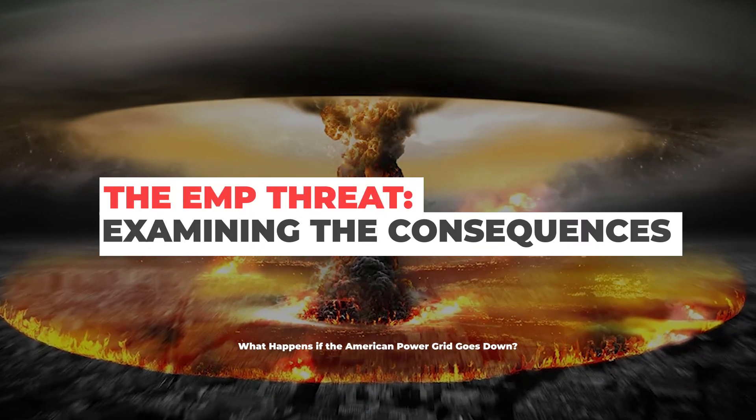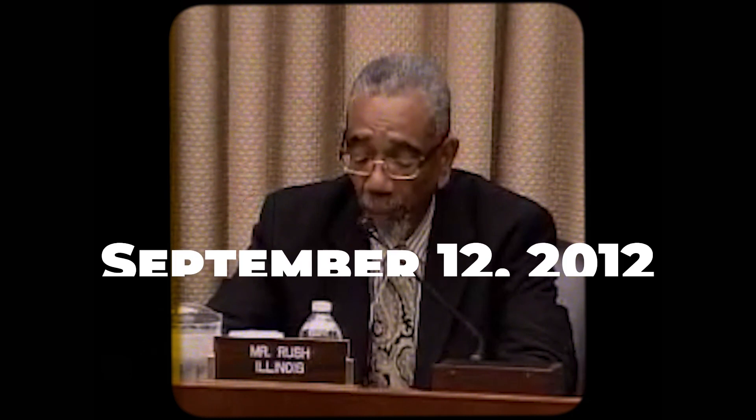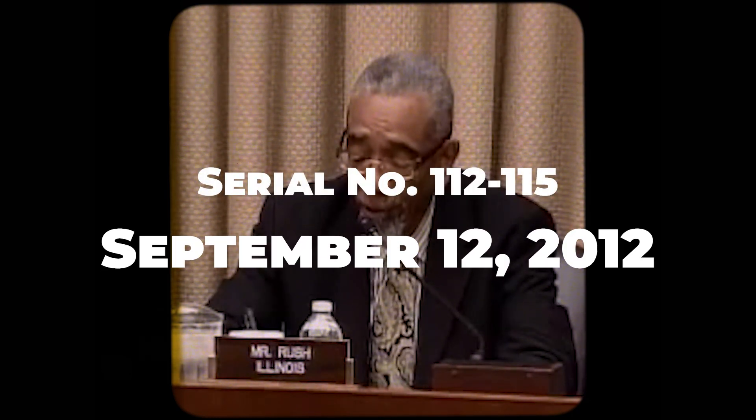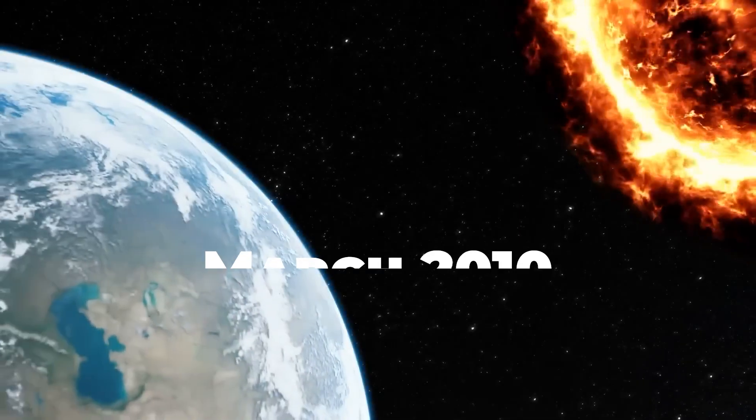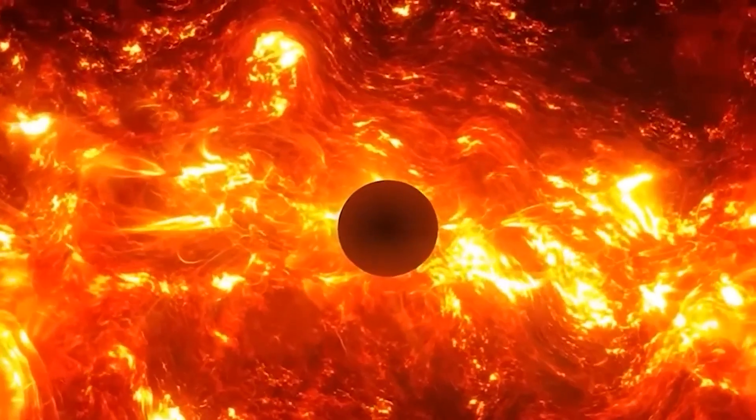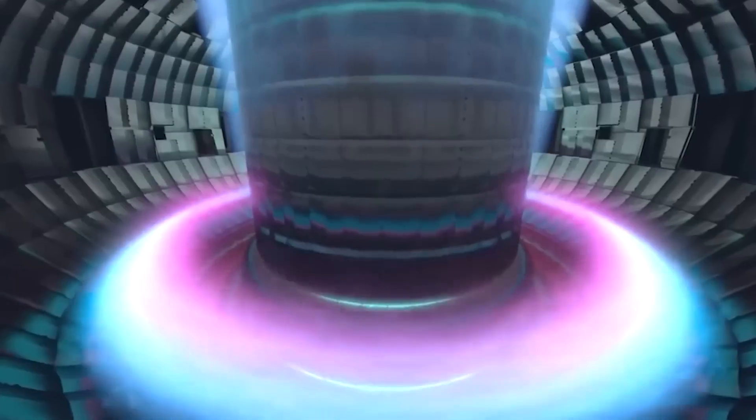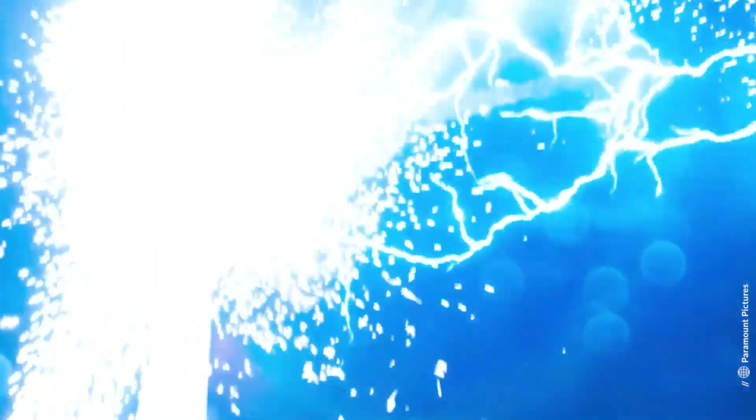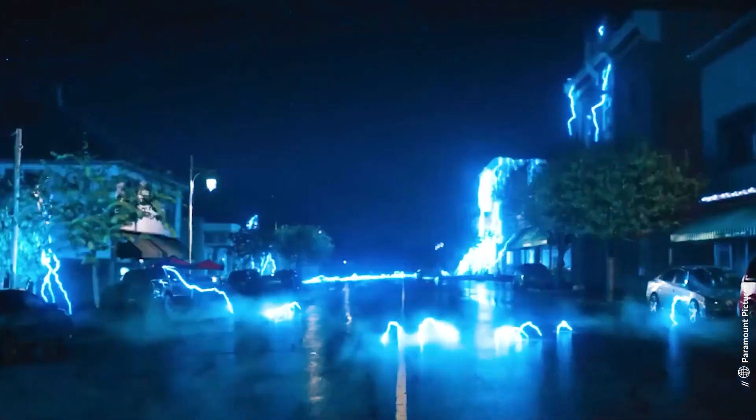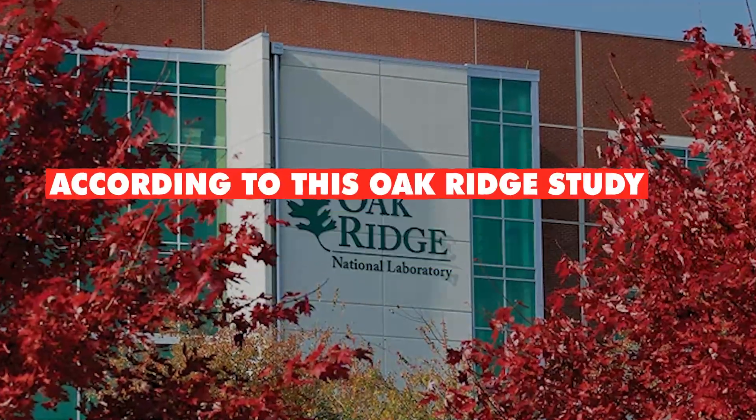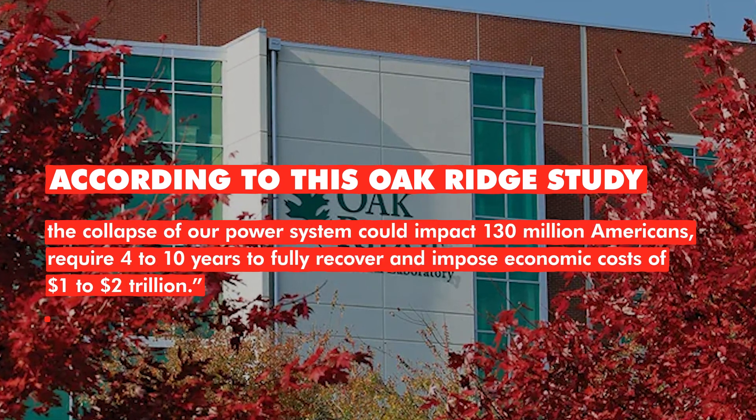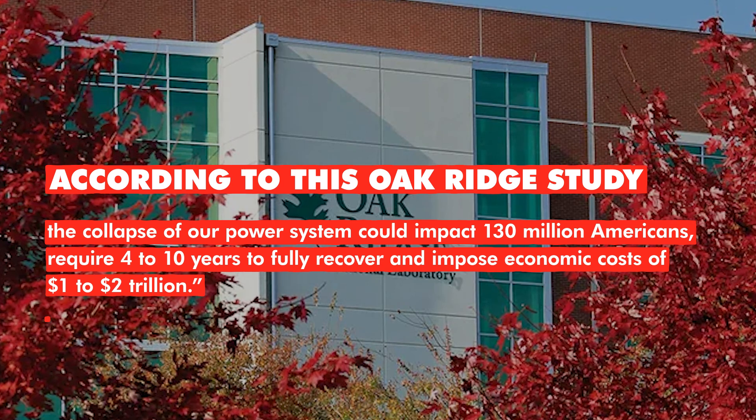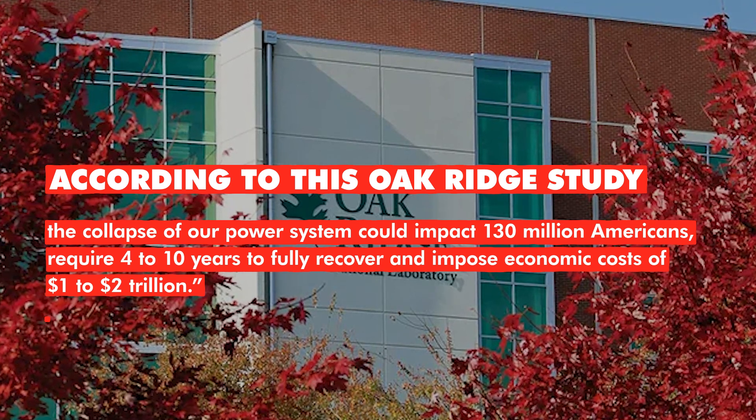The EMP threat. Examining the consequences. Hearing before the Subcommittee on Cybersecurity, Infrastructure Protection, and Security Technologies of the Committee on Homeland Security House of Representatives. 112th Congress Second Session, September 12, 2012. Computer simulations carried out in March 2010 by Oak Ridge National laboratories demonstrated that an electromagnetic pulse from a nuclear device detonated at high altitude or a powerful solar storm could destroy or permanently damage major sections of our national power grid. According to this Oak Ridge study, the collapse of our power system could impact 130 million Americans, require 4 to 10 years to fully recover, and impose economic costs of $1 to $2 trillion.